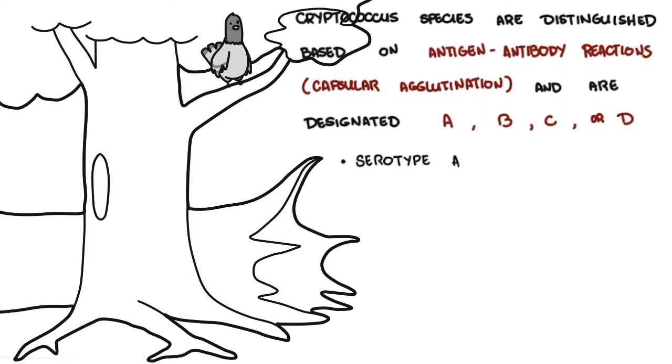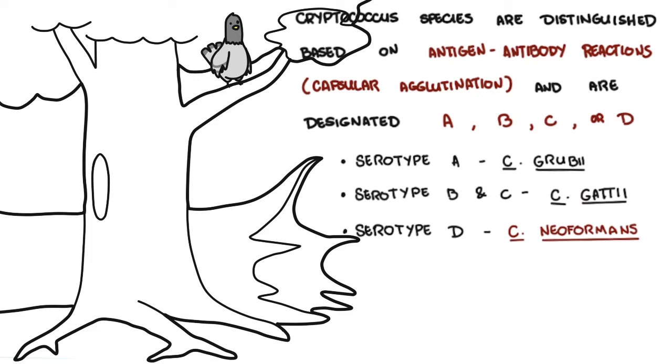Serotype A is known as Cryptococcus grubii, serotypes B and C is Cryptococcus gattii, and serotype D is the Cryptococcus neoformans that we know, which worldwide is pathogenic.